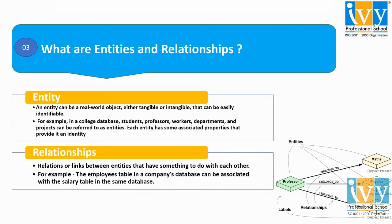Now coming to the relationship. Relations or links between entities that have something to do with each other are known as relationships. In the same diagram, we can see the professor can belong to the mathematics department, the physics department, and the management department — meaning the professor and the respective department have a relationship between each other. For example, in a company database, the employees table can be associated with the salary table in the same database.